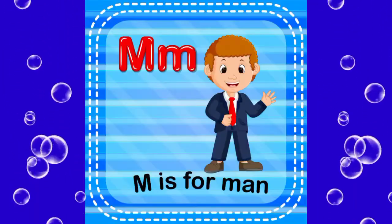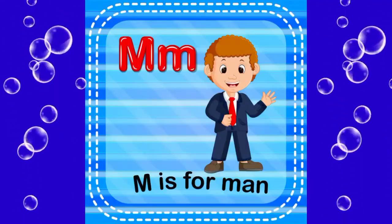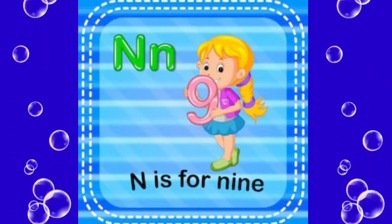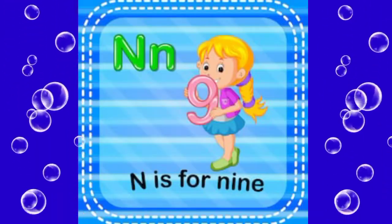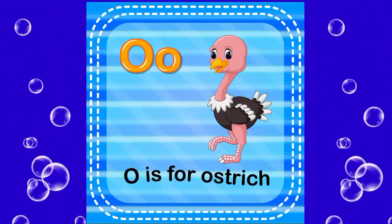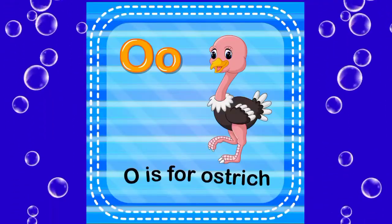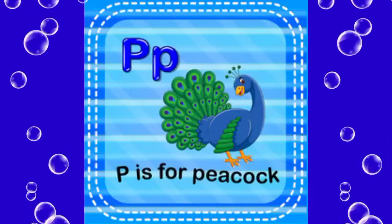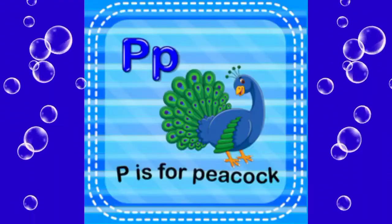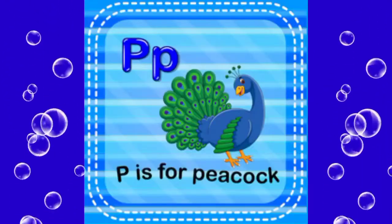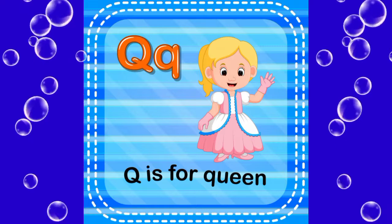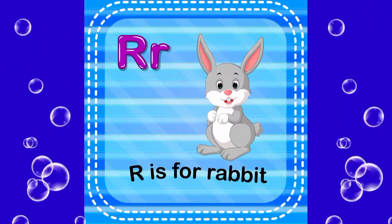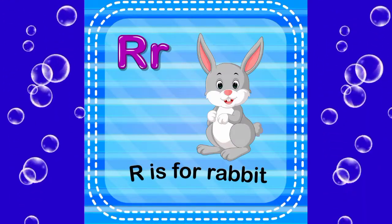M is for man, N is for nine, O is for ostrich, P is for picker, Q is for queen, R is for rabbit.